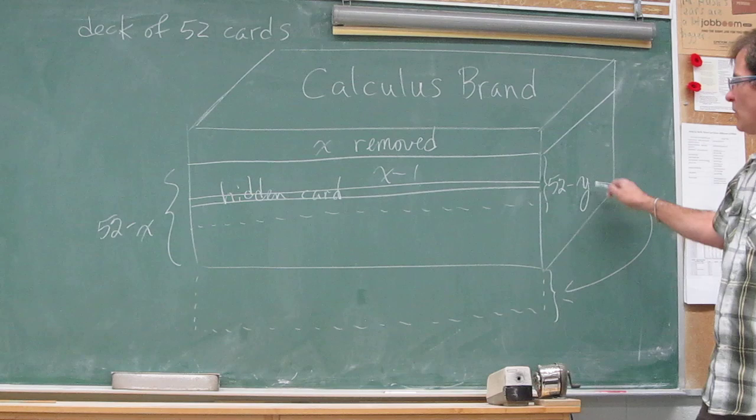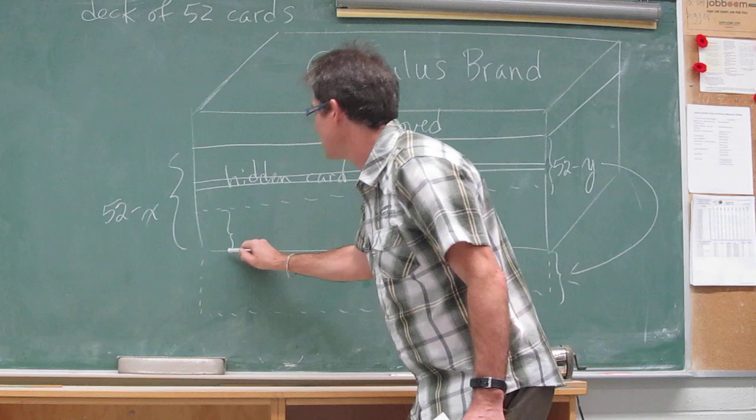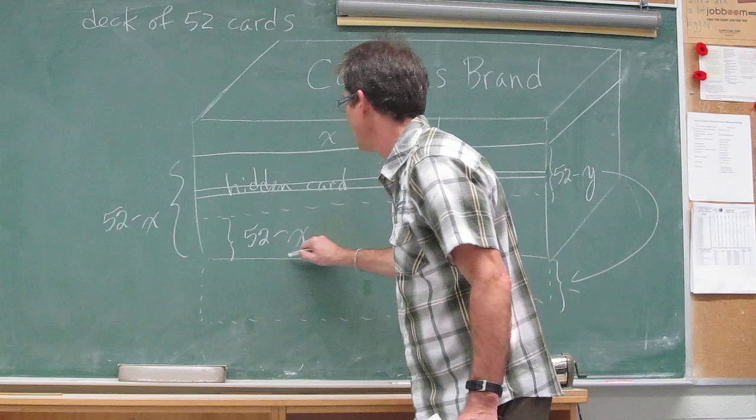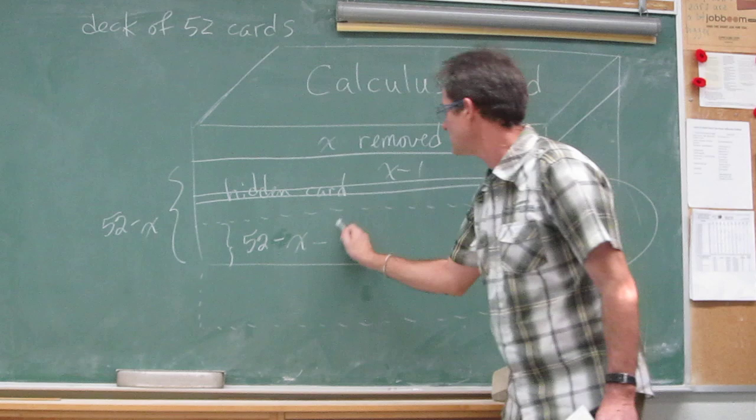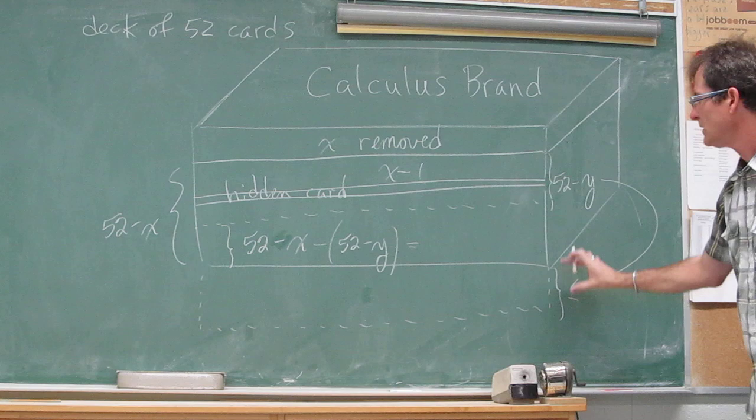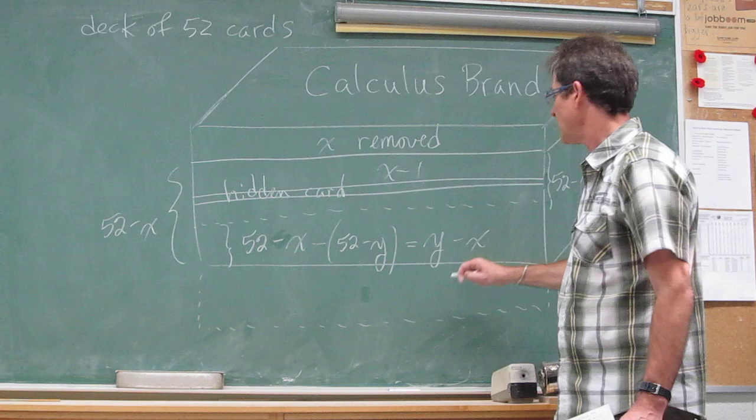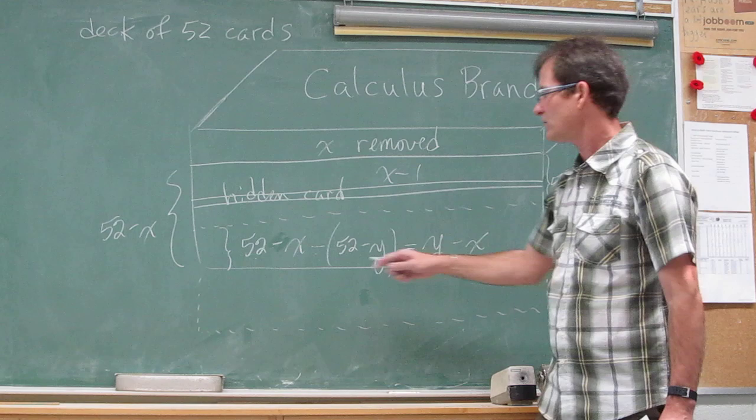Once I removed those cards from the top and put them on the bottom, how many cards were left in the original portion of the deck? Well, 52 minus X, that's this number, subtract that number, because those were moved down here. So the remaining number in the top part of the deck is equal to Y minus X. The 52's subtract to give zero. Negative negative Y is positive Y minus X.